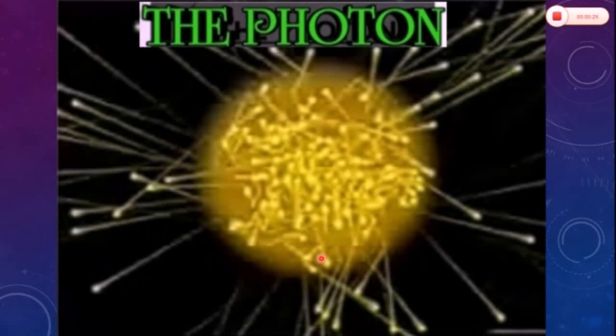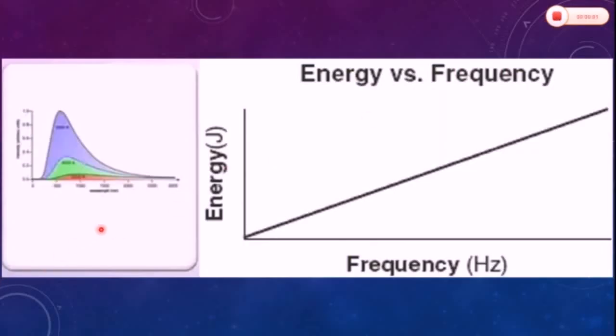E equals h nu, where h is Planck's constant with value 6.63 times 10 to the power minus 34 joules seconds in SI units, and nu is the frequency of the incident radiation. Albert Einstein based his ideas on the work of German physicist Max Planck.